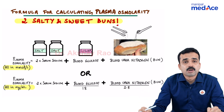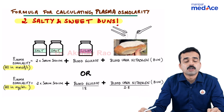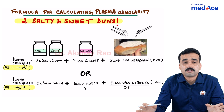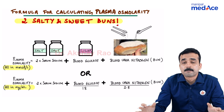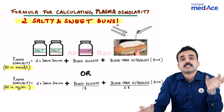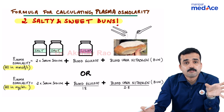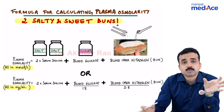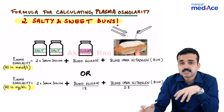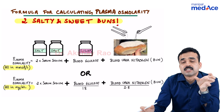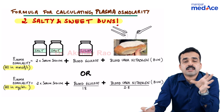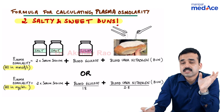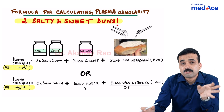Why is this formula important? Because sometimes we need to find out the osmolar gap, which is the lab-derived value of plasma osmolality minus the measured osmolality according to the formula. If this difference exceeds 15 milliosmoles, then there is a positive osmolar gap.